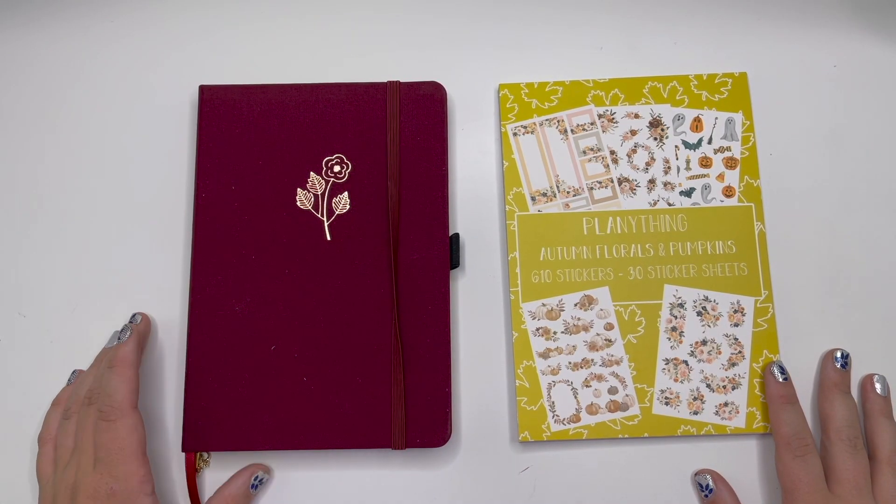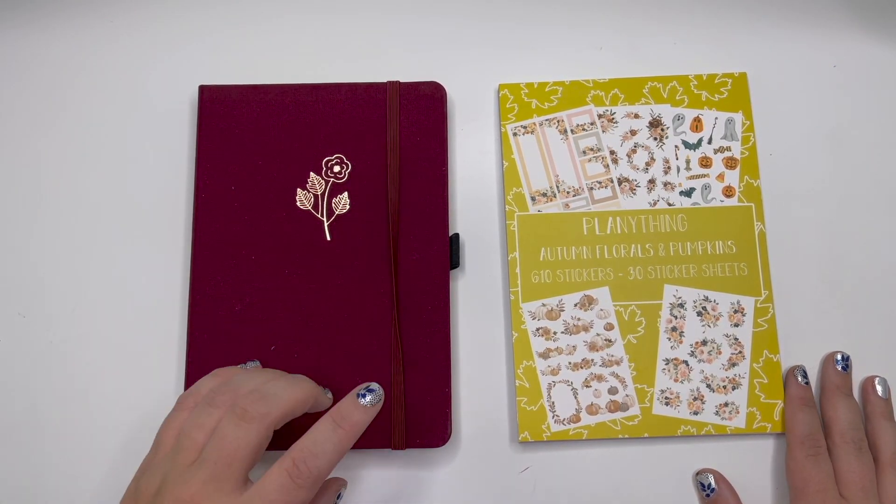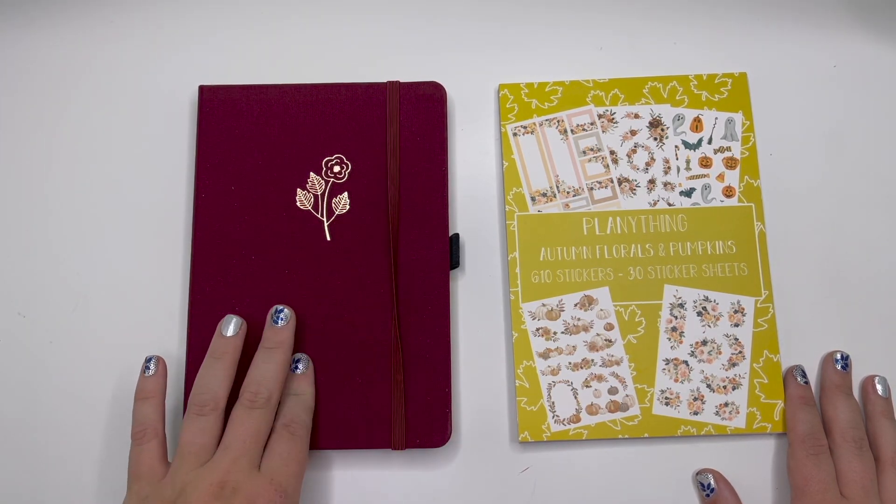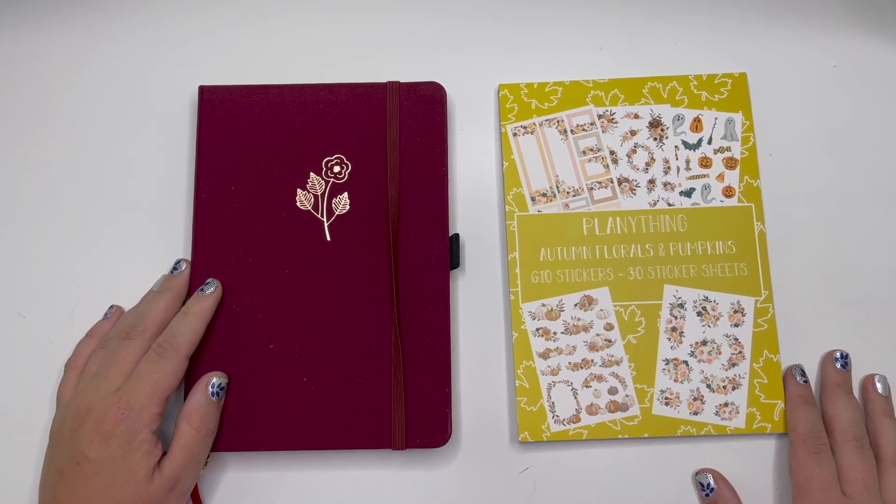Hey planner babes, it's Amber from Every Planner Day. I just want to come on and do a plan with me for my journal, Archer and Olive dot grid notebook. So make sure you stay tuned.